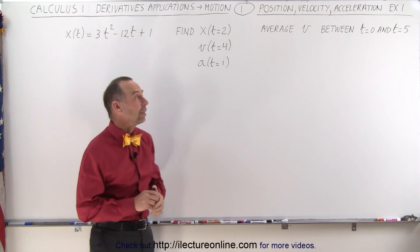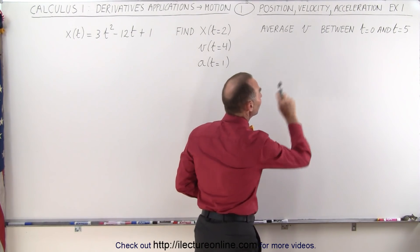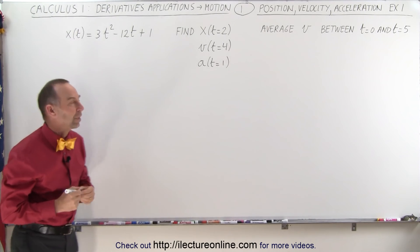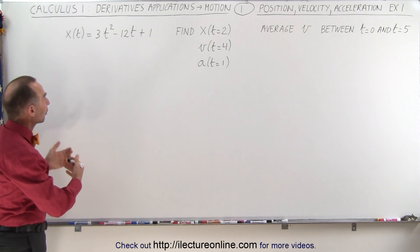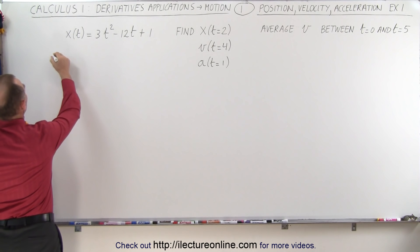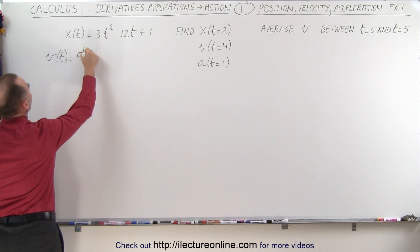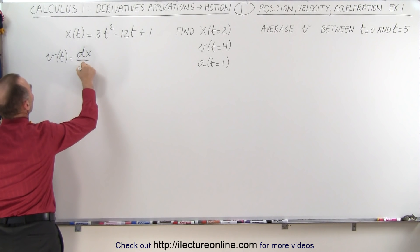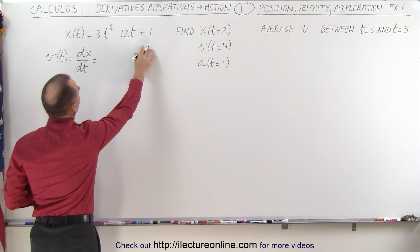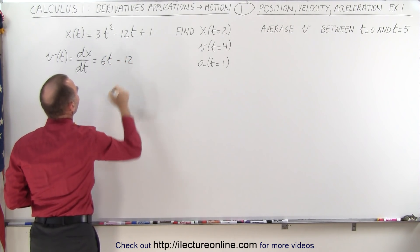In addition to that, we're going to find the average velocity between time equals zero and time equals five. First, we're going to find the equation for the velocity, and that equation is equal to the derivative of the position with respect to time, which gives us 6t minus 12.